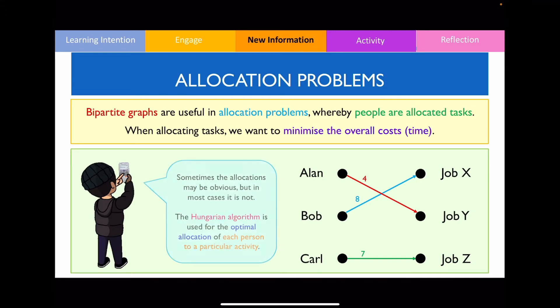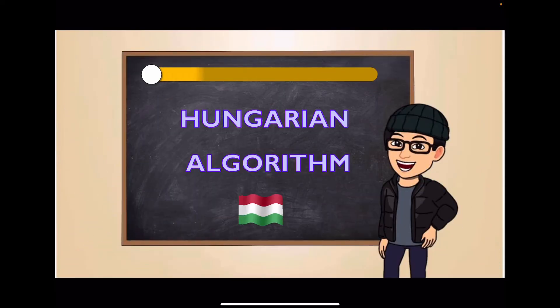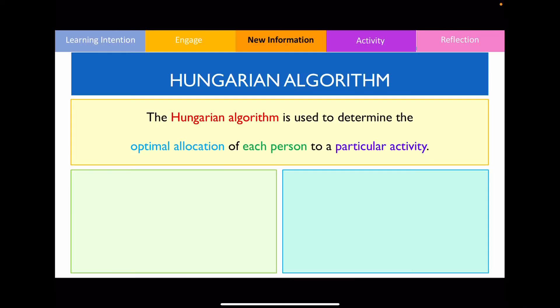In most cases, these allocations would not be obvious at all. To assign a job to each worker, we therefore need to apply the Hungarian algorithm to find the optimal allocation for each worker to do a particular activity. We use the Hungarian algorithm when finding the optimal assignment for each person to a particular task for an overall job or project. There are many steps involved, but these can broadly be categorised into two main phases.